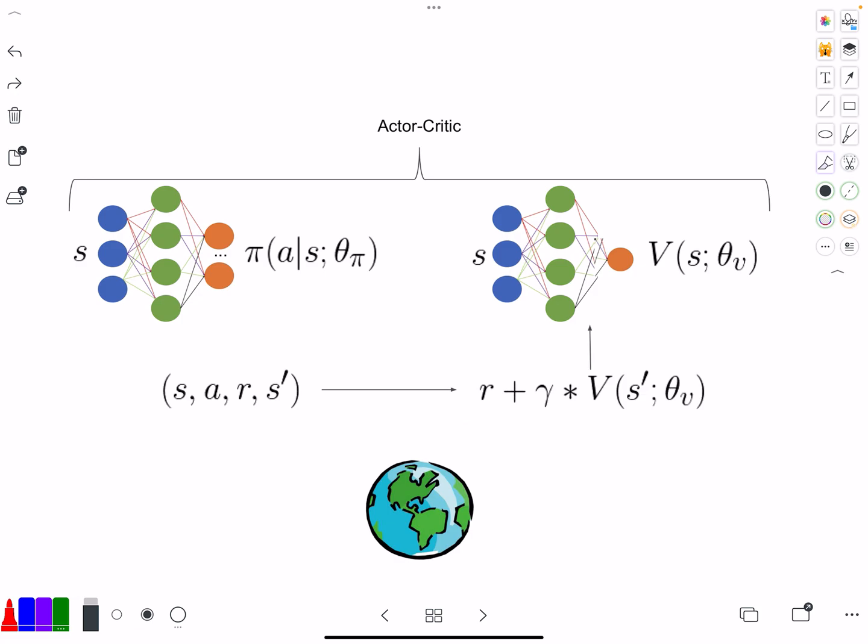This can be used then to train that value function. And then now you have a critic that is better at estimating the reward to go. That then can be used to calculate what is called an advantage, the advantage function, which there are many ways to do it, but this is a common way. That can then be used to train the policy.